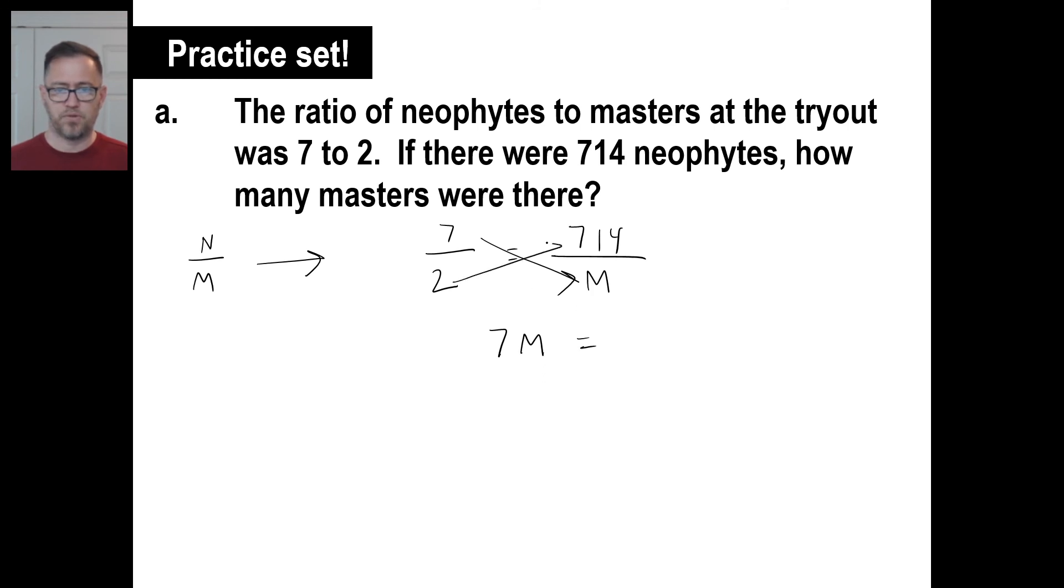7 times M is equal to 714 times 2. 7 times 2 is 14, 14 times 2 is 28. And there we go. Divided by 7, M is equal to - 14 divided by 7 is 2, 28 divided by 7 is 4. And there we go, 204.